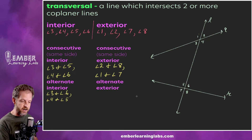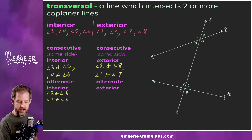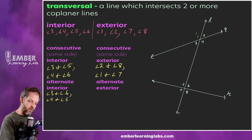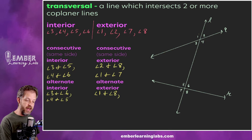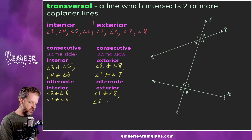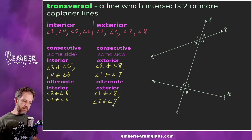Alternate exterior angles are on opposite sides of the transversal but on the exterior of the two lines. So angle 1 and angle 8 would be one pair of alternate exterior angles, and then angle 2 and angle 7 would be the other pair of alternate exterior angles.